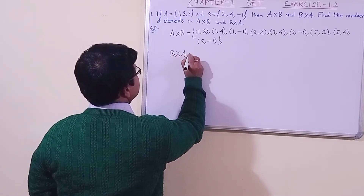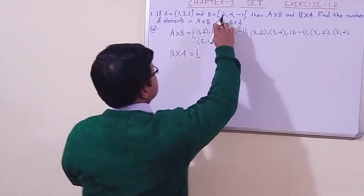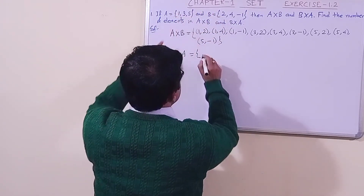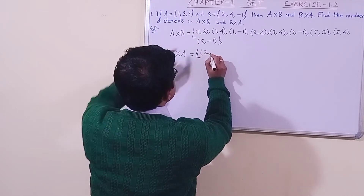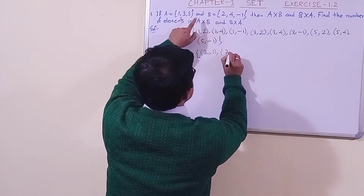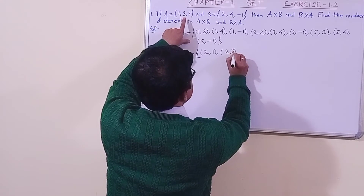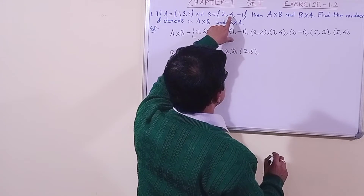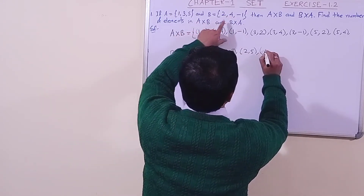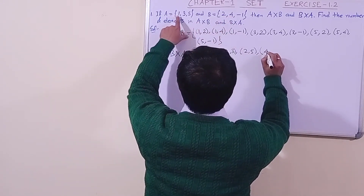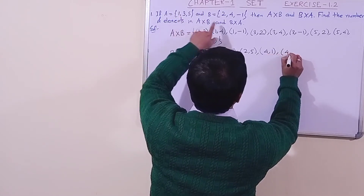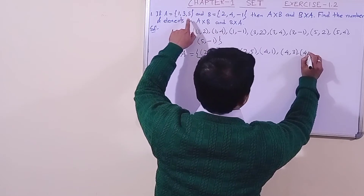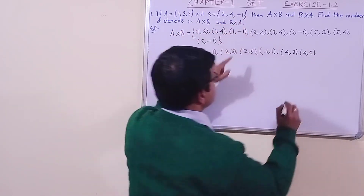For B cross A, element 2 should be paired with all three elements of A: 2 is paired with 1, then 2 is paired with 3, then 2 is paired with 5. Now the second element: 4 is paired with 1, then 4 is paired with 3, then 4 is paired with 5.